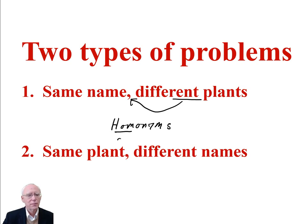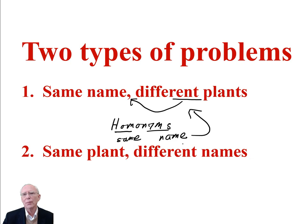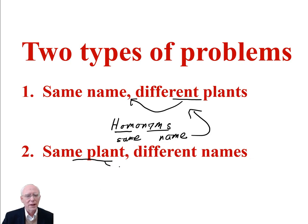Homo means same, and nim means name. The Greek roots of this word tell us exactly what the problem is — it's the same name for different plants. The complementary problem occurs when we have one plant, but it's given different names by different authors. This is the problem of synonyms.